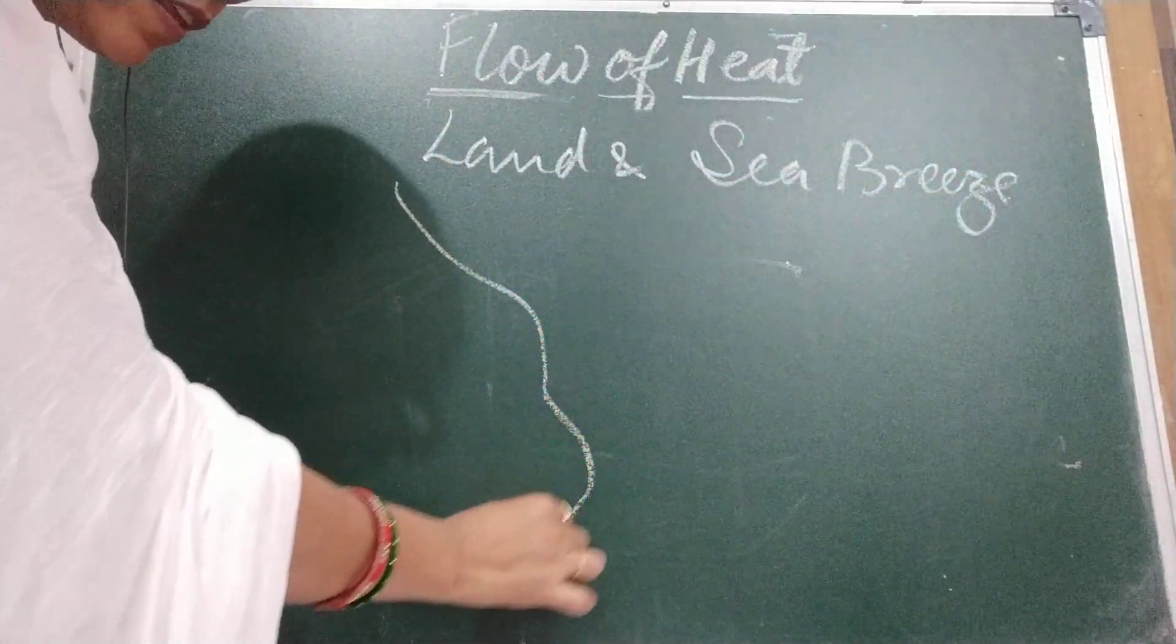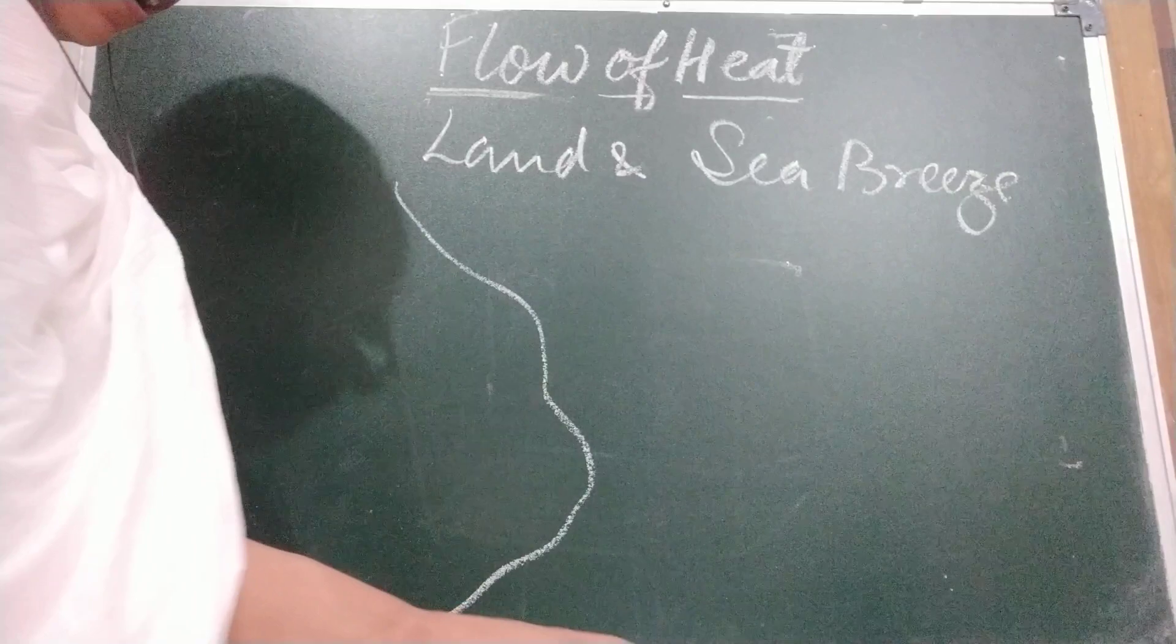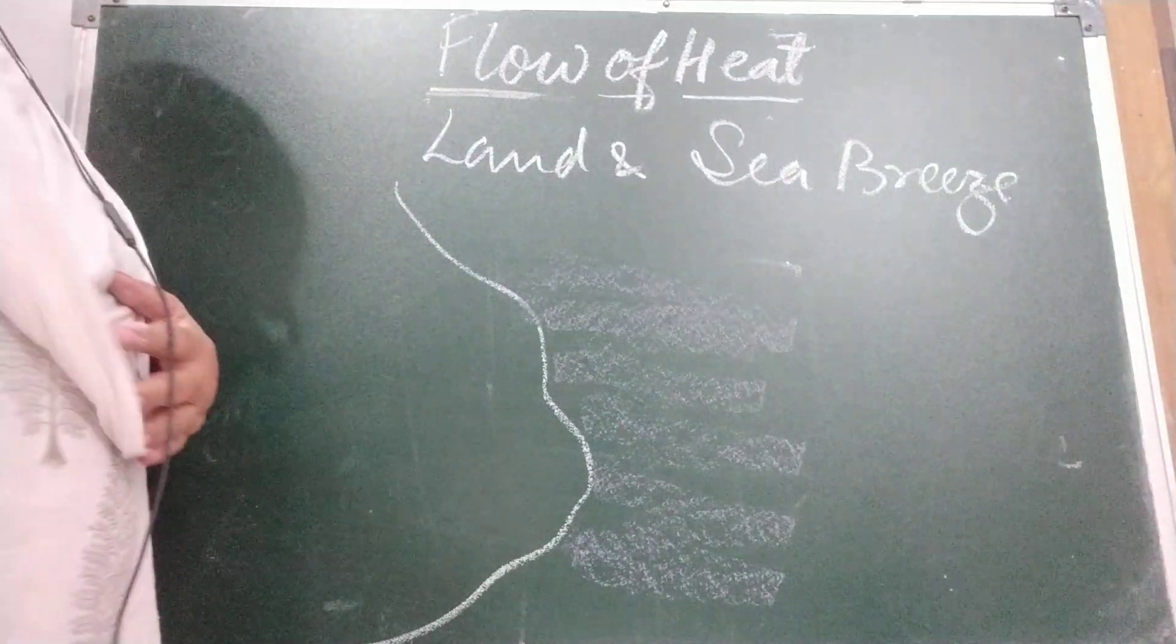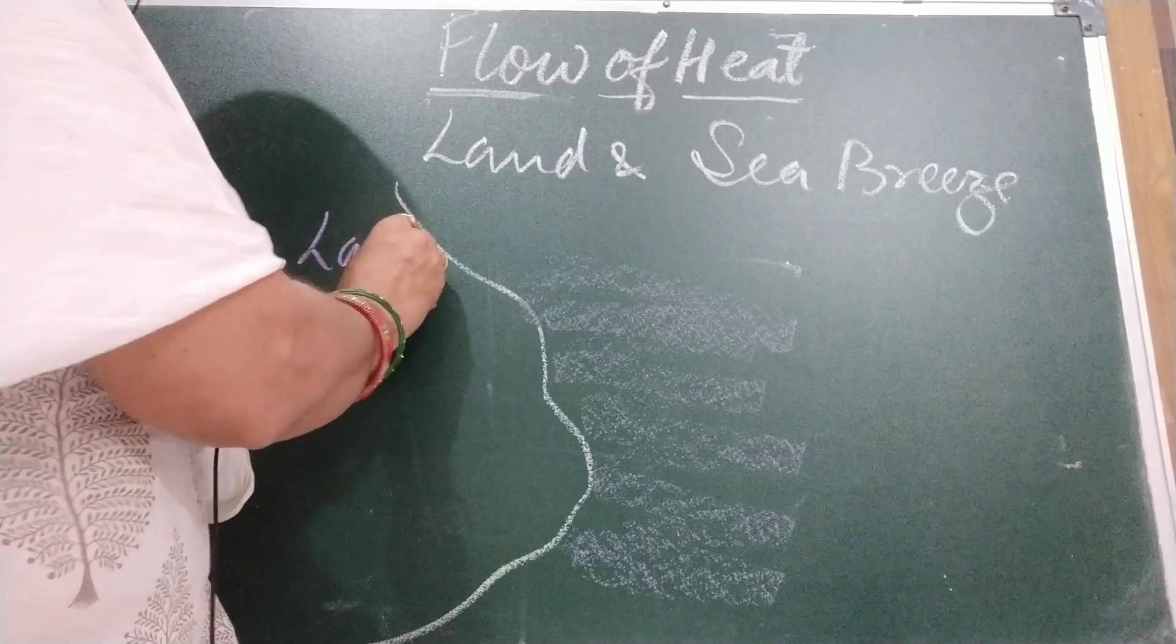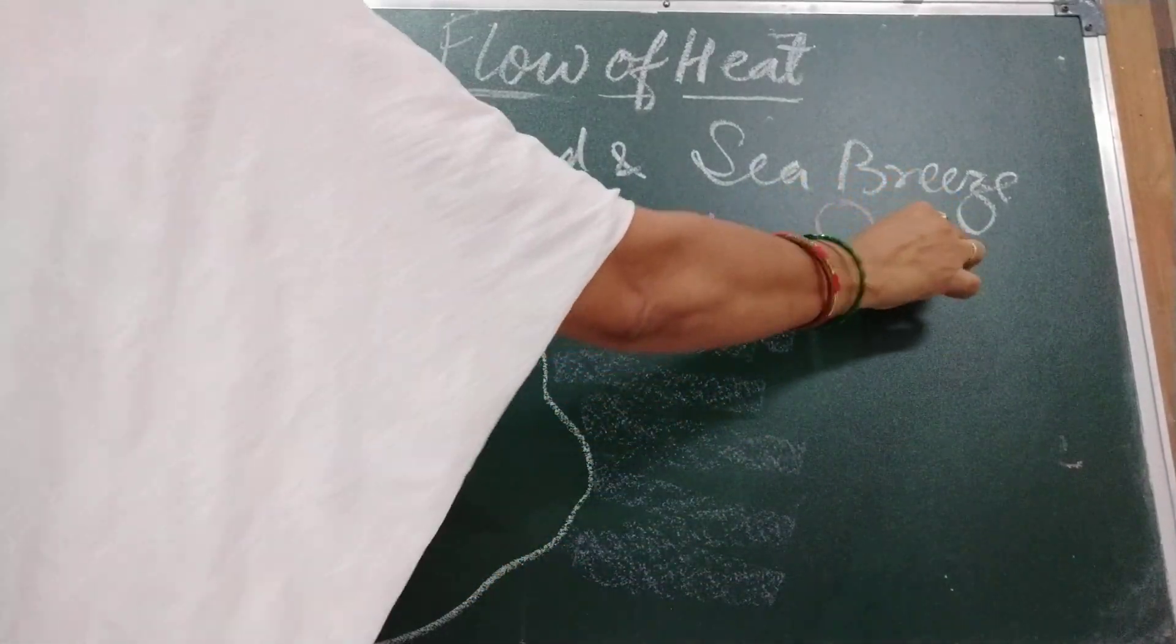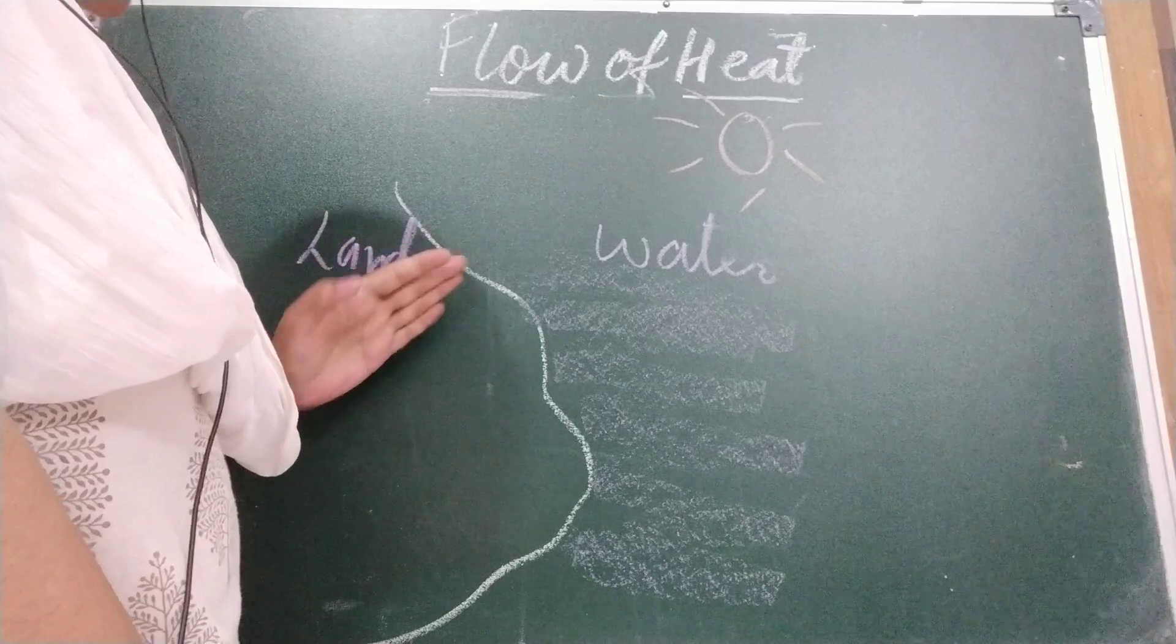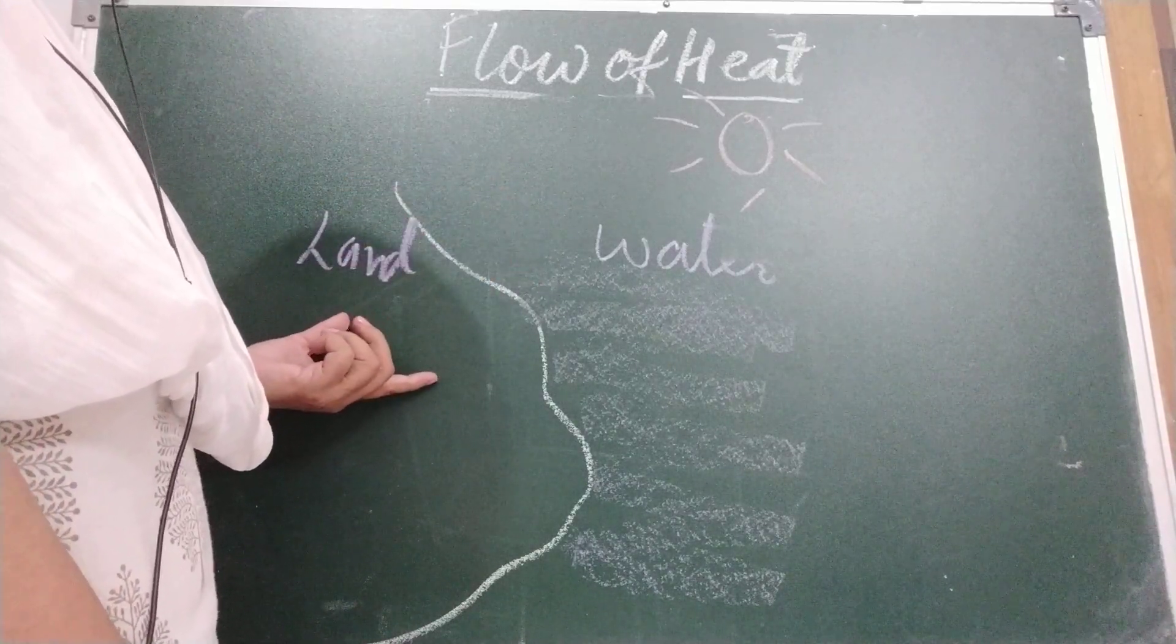As we know, sea and land breezes are actually convection currents. We know that water has a higher heat capacity than land. This is water. Water takes more time to heat up than the time taken by land. This is land, this is water. During the day, when the sun is there, land heats up more than water.